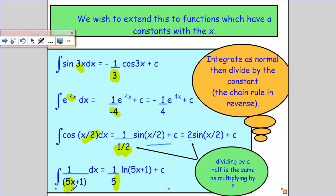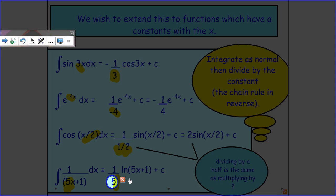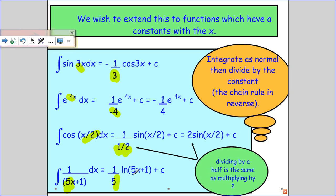And then we've got 1 over 5x plus 1. That would have come from ln of 5x plus 1 because it's a 1 over function. And the 5 is there because of this 5 here.